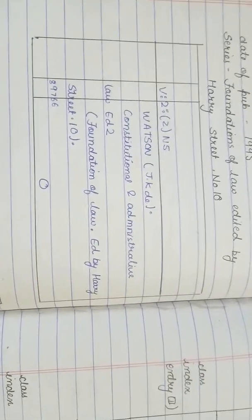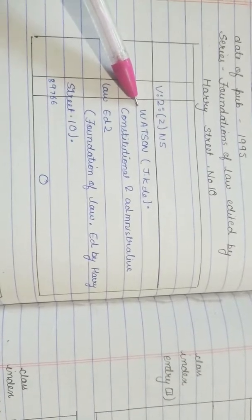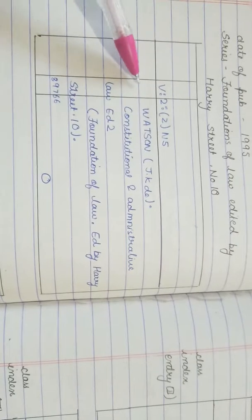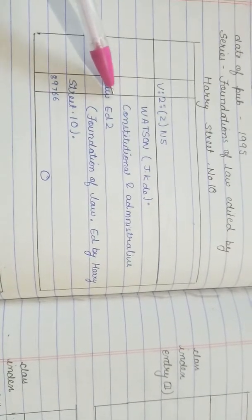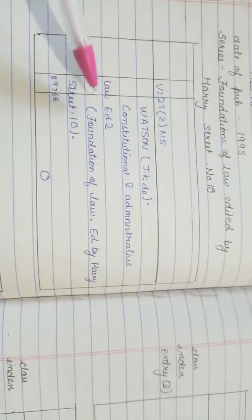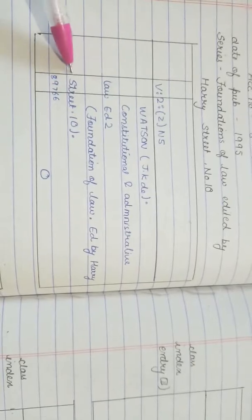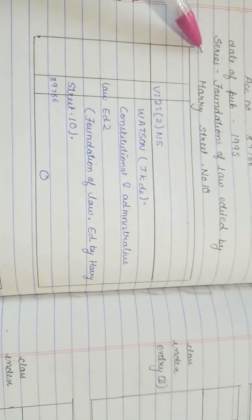So, the main card we have: call number, writer name Watson J.K.D., 'Constitution and Administrative Law', 2nd edition — this is our title. Then we have the series: Foundation of Law, edited by Harry Street, number 10.